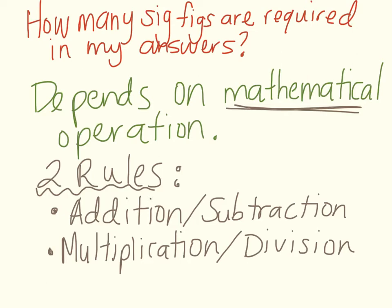The rules depend on whether you're adding or subtracting — there's a set of rules for that — and then the next rule is if you're multiplying and dividing. So let's work on an example of each.